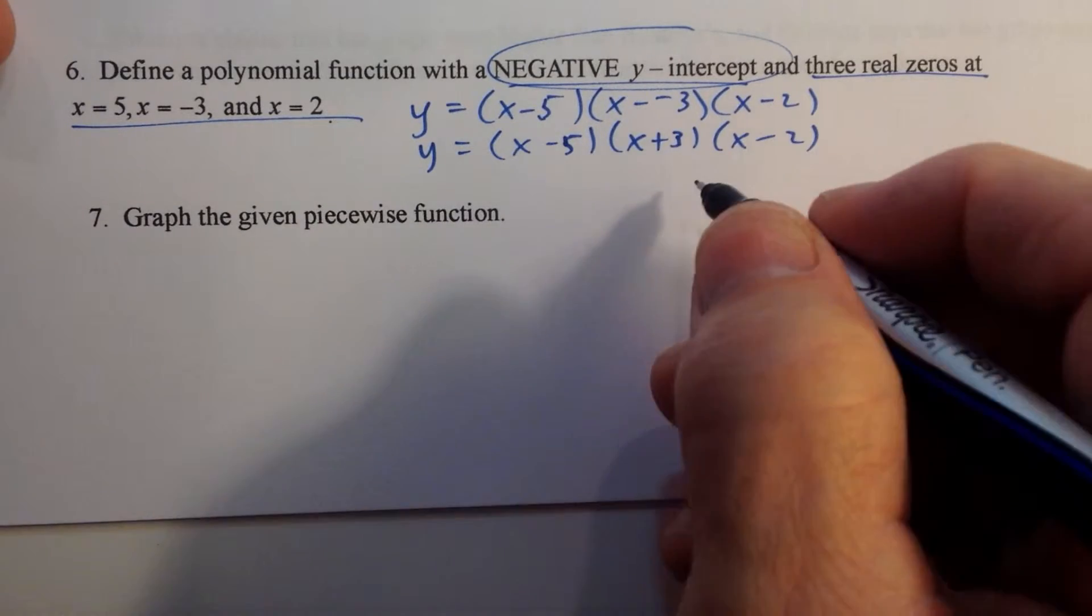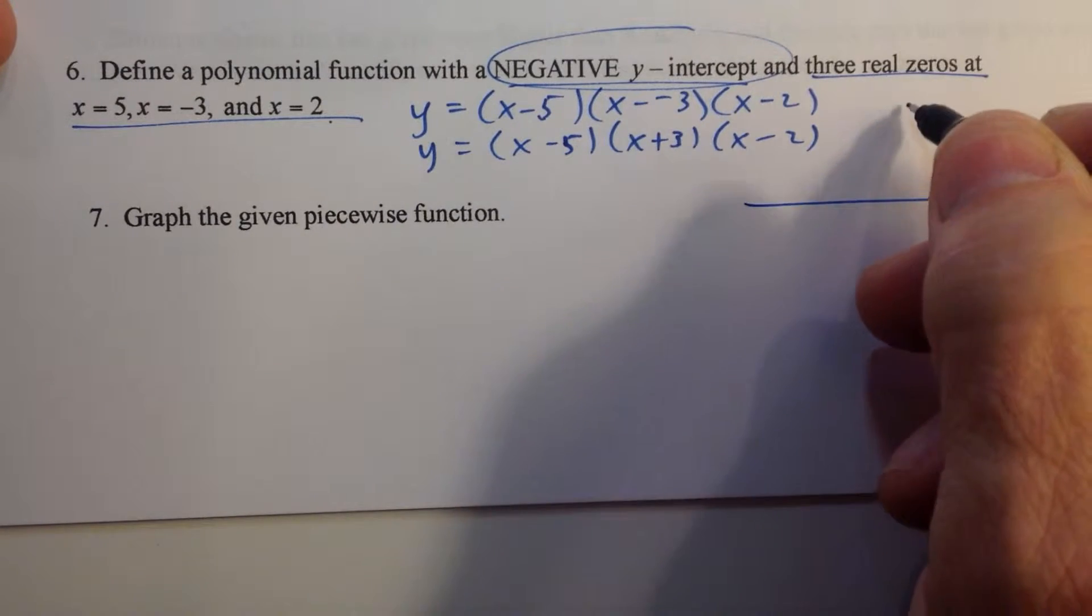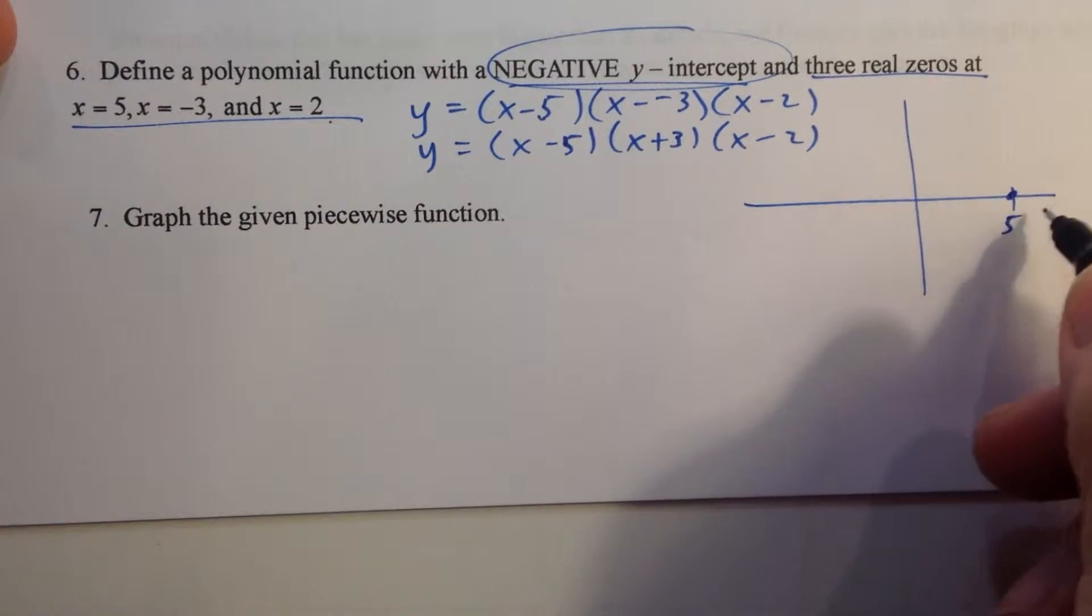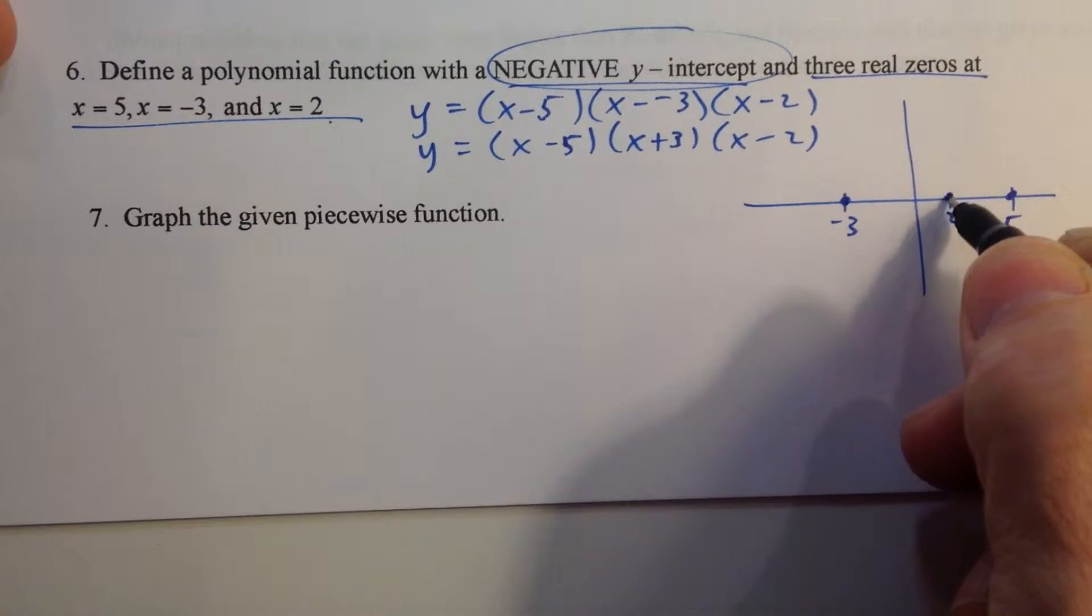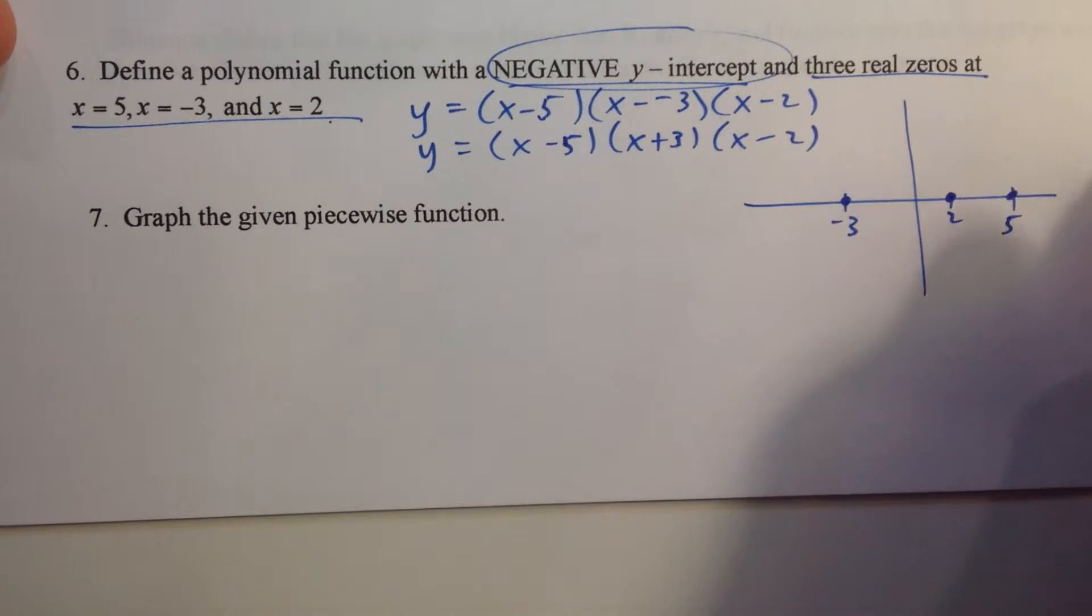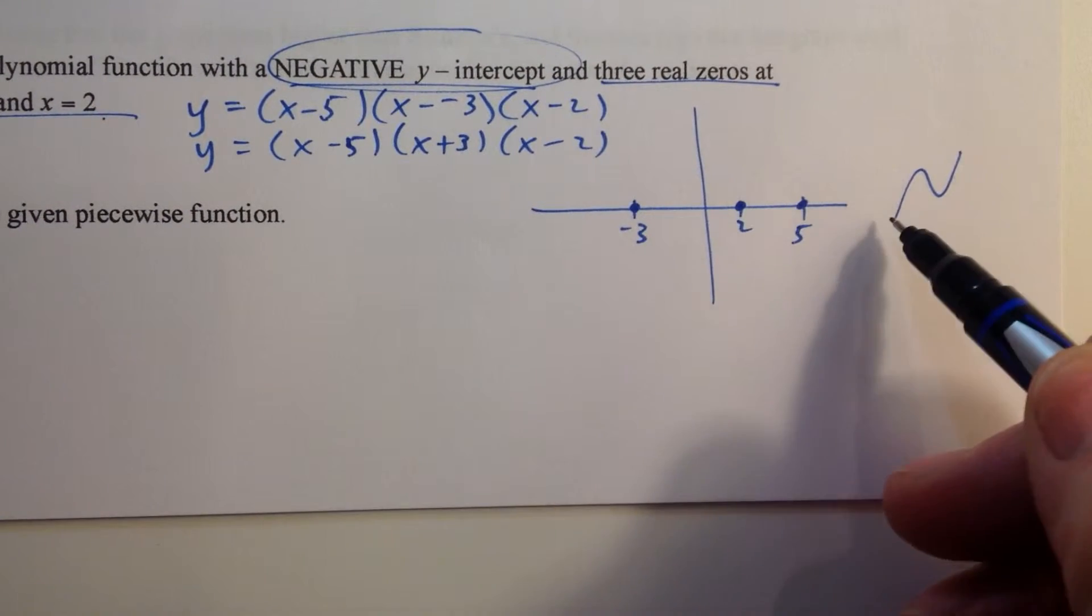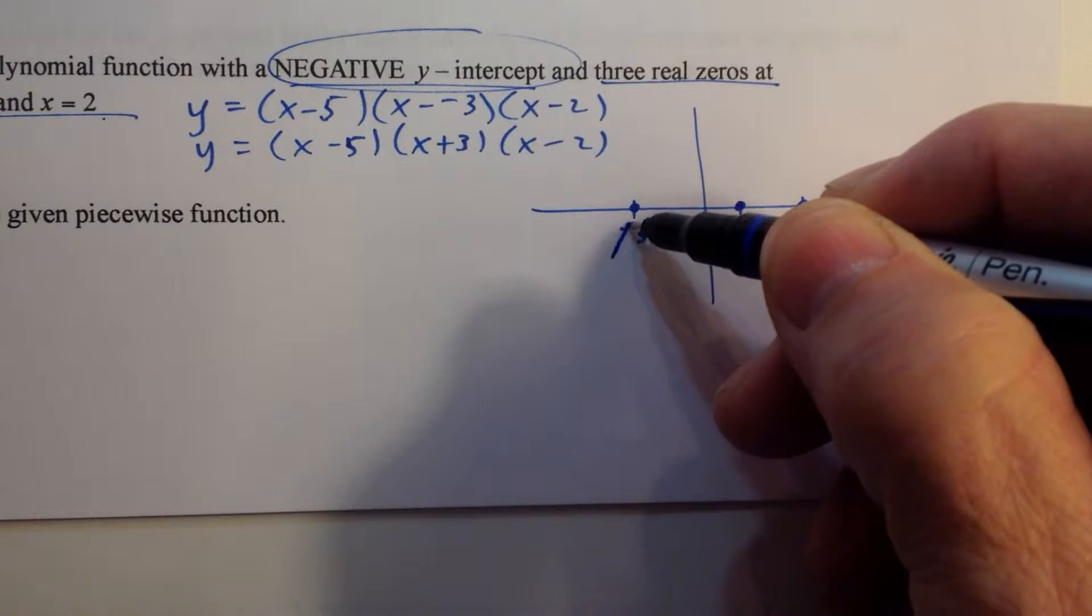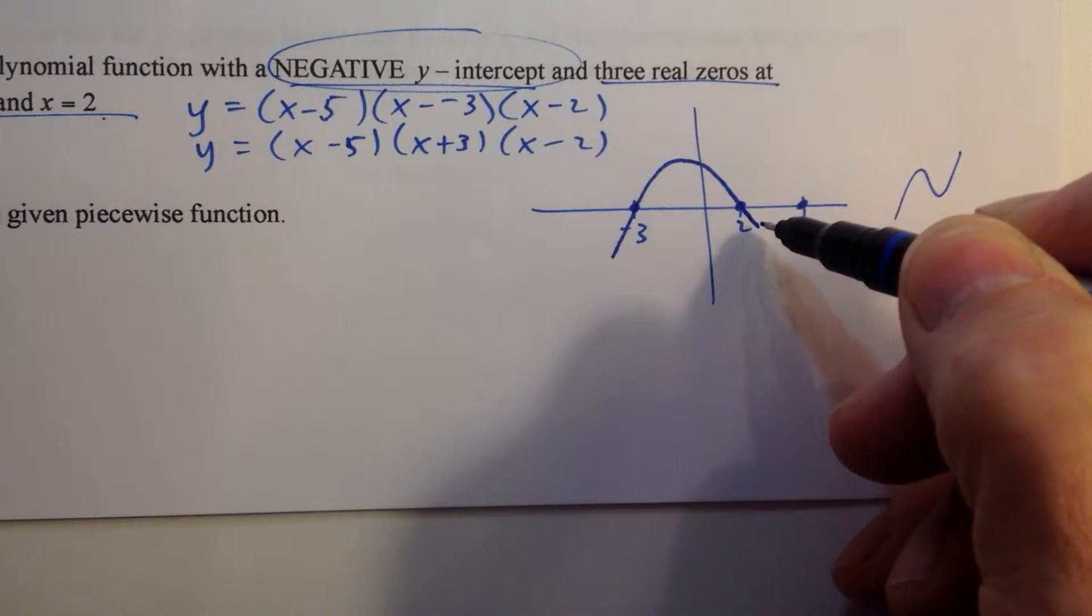There's a couple different ways we can do this. If we just drew the graph, we could see the zeros at 5, negative 3, and 2. This particular function here is a third-degree polynomial, which means it's going to go up from left to right. If we go up from left to right, every single one of these zeros is a multiplicity of 1.